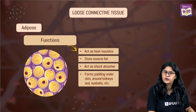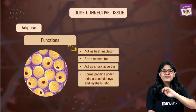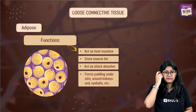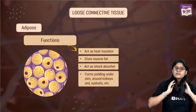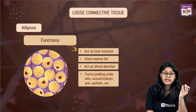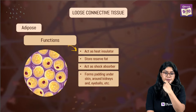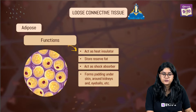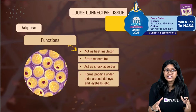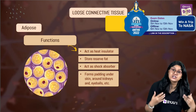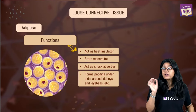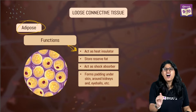Conductors allow the movement of electricity or heat through them. The insulator is the one that will not allow the flow of heat. These adipose cells act as an insulator - they are all around our body, so they will not allow the heat to pass, which helps in maintaining temperature especially during winter time. The polar bear has a very thick adipose tissue layer - that's why they can survive in harsh climatic conditions.